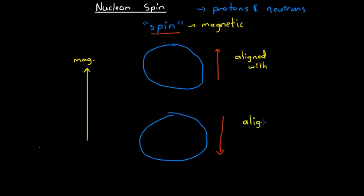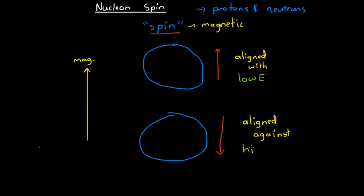Now that we've got this external magnetic field, and these up and down spins are now either aligned with or aligned against the external magnetic field, the energy of these two nucleons is, in fact, different. If a nucleon is aligned with the magnetic field, that is the lower energy state. If a nucleon is aligned against the magnetic field, this is the higher energy state.